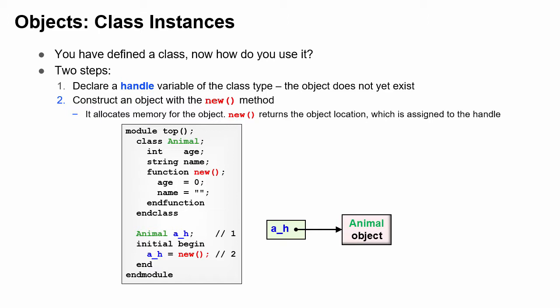This allocates memory for the properties and initializes them. The constructor then returns the location. So now a_h points to the object. This course has a coding convention that handles end with _h. Your company may have a different convention.